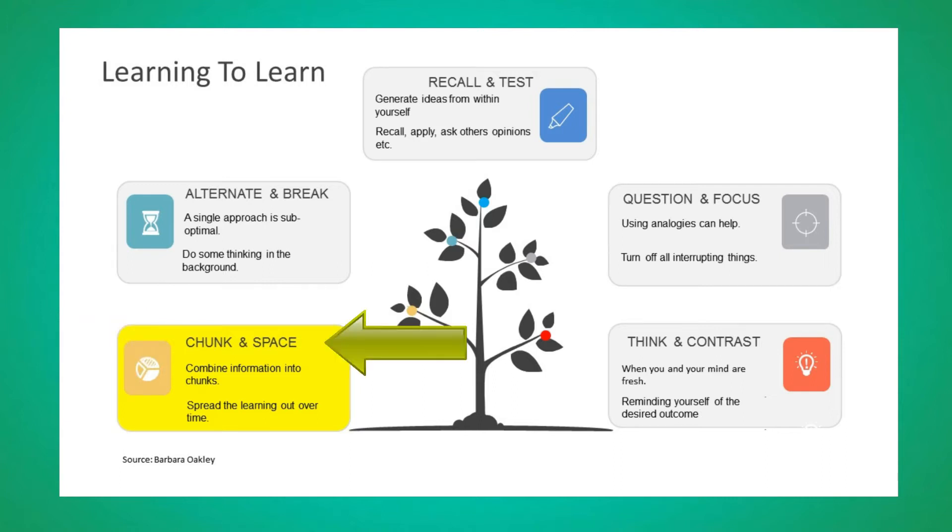Rule number two is called spacing. Because your brain is like a muscle and it needs a break now and again, you need to space your learning. What this means is that you don't try to learn everything at once. It's better to spread the learning out over time.